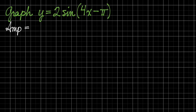Beginning with the easier qualities of this function, I can tell that the amplitude is going to be the absolute value of 2. It's going to come from the coefficient that's in front of the sine.